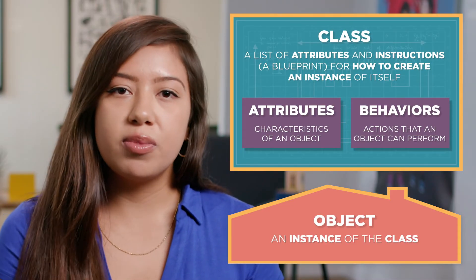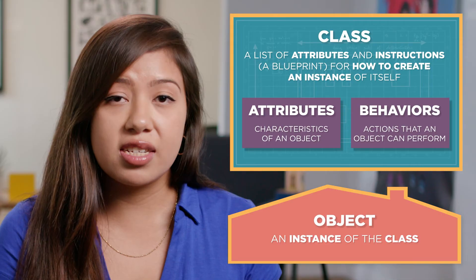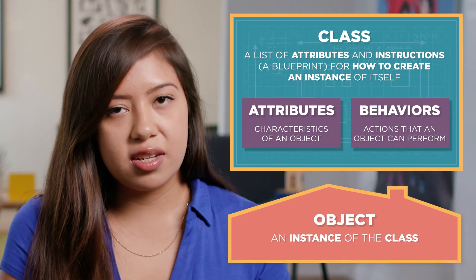Each house we build from the blueprint is an instance of the architect's design. So each object we create is an instance of the class. As we build each house we are instantiating house objects.